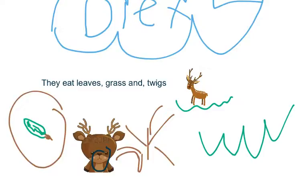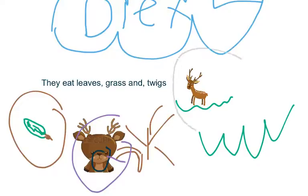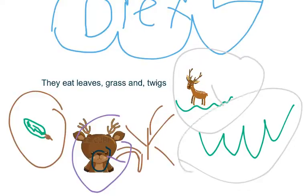And this right here is supposed to be a deer eating the twigs. And this is a deer right here eating the grass. And also this right here is the grass too.